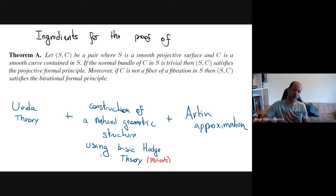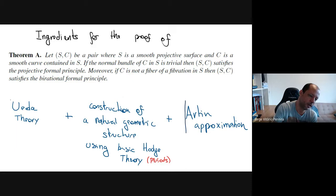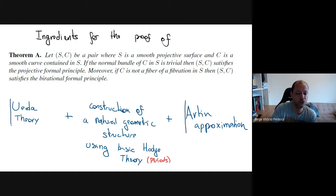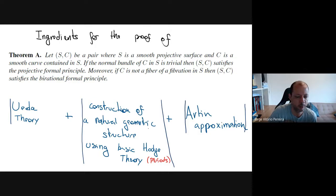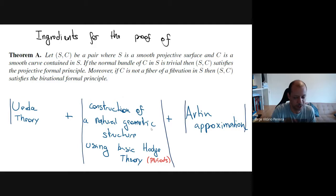The proof has essentially three ingredients. One of them, no surprise, is Artin approximation. The other two involve Ueda theory and basic considerations with Hodge theory, from which we produce a canonical geometric structure attached to our neighborhood. This geometric structure is what allows us to apply Artin approximation, because to apply it we need to transform our problem into a local problem and present our conjugation morphism as a solution to a local system of equations.